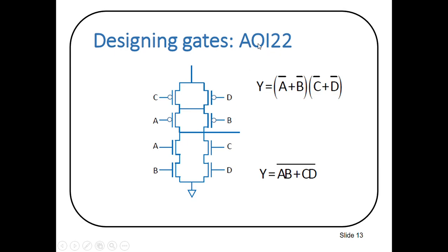AOI22 means AND-OR-Invert 22 — 2+2 inputs, meaning 4 inputs total. The function is (AB + CD)'. A and B are in series, and C and D are in series; these two combinations are in parallel. In the pull-down network, A and B are in series, CD are in series, and these are in parallel with each other — using only N-MOS transistors.